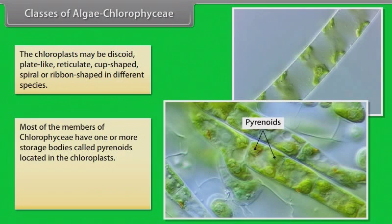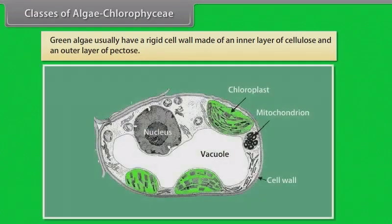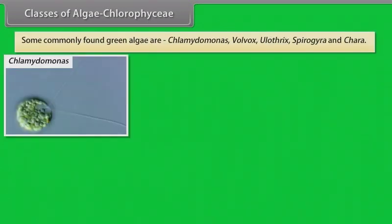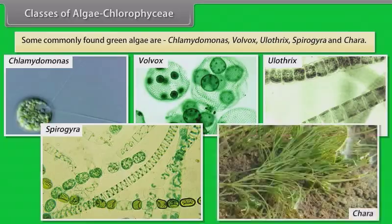Most of the members of chlorophyceae have one or more storage bodies called pyrenoids located in the chloroplasts. Pyrenoids contain protein besides starch. Some algae may store food in the form of oil droplets. Green algae usually have a rigid cell wall made of an inner layer of cellulose and an outer layer of pectose. Some commonly found green algae are chlamydomonas, volvox, ulothrix, spirogyra and chara.